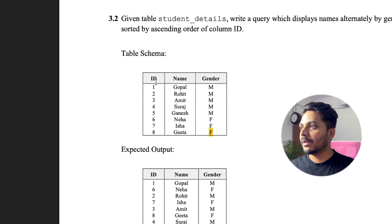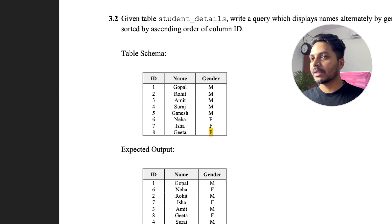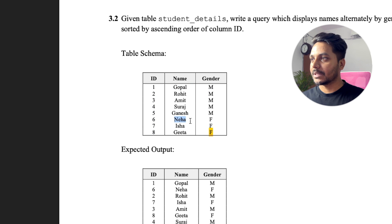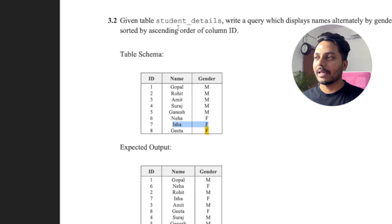We have a table with columns id, name, and gender. First we need to order the data by the id column. Then we need student names alternately based on gender — first a male, then Neha as the second, then again male, then female. So we need to order the data in this alternating pattern.